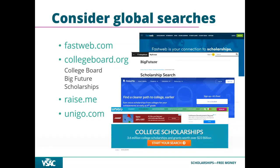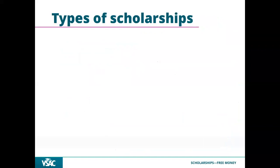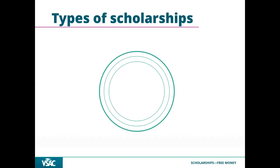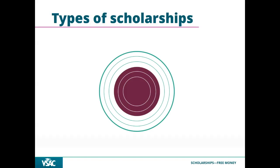Think of scholarships as rings: the outer ring is broad national scholarships with lots of competition and larger amounts; the middle ring is statewide scholarships like the VSAC booklet, competing against all Vermonters; the inner ring is local scholarships with the smallest applicant pool. If time is limited, focus on local first, then statewide, then broader scholarships.